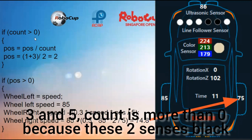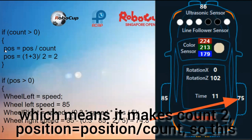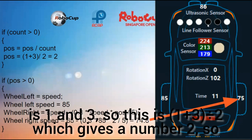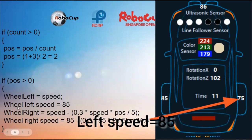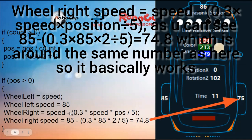Count is more than zero because two sensors sense black, making count equal to 2. So position equals position divided by count. The two active sensors have values 1 and 3, so 1 plus 3 divided by 2 gives 2. Position is more than zero, so wheel left equals speed — 85. Wheel right equals 85 minus 0.3 times 85 times 2 divided by 5, which gives 74.8. As you can see, that matches the expected result, so it basically works.